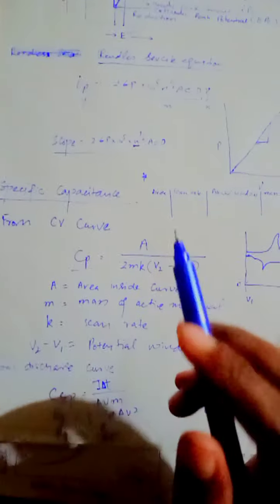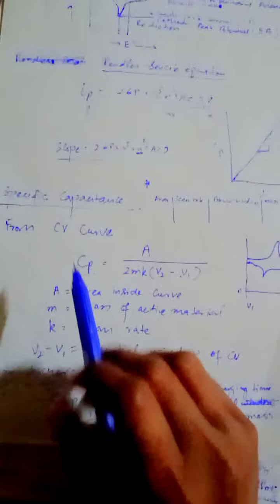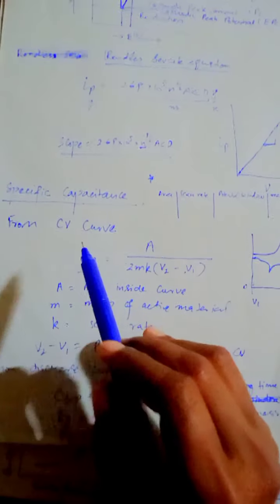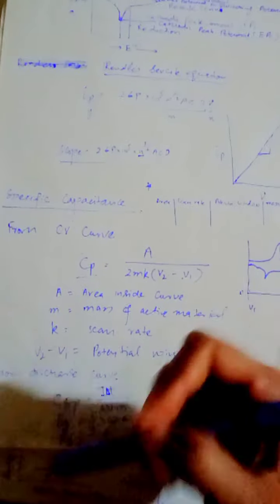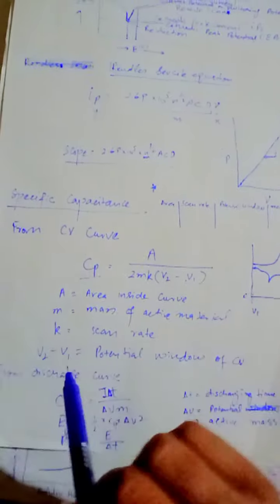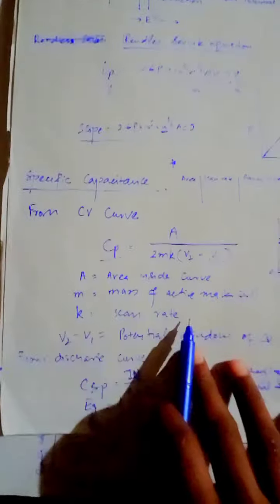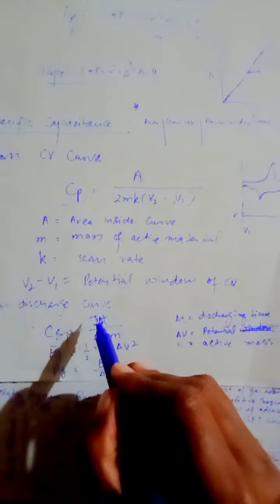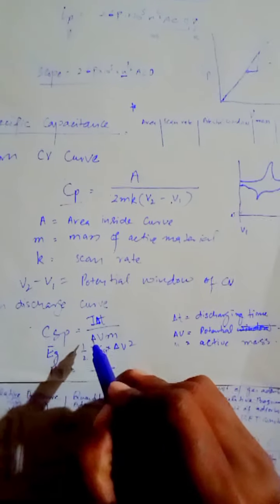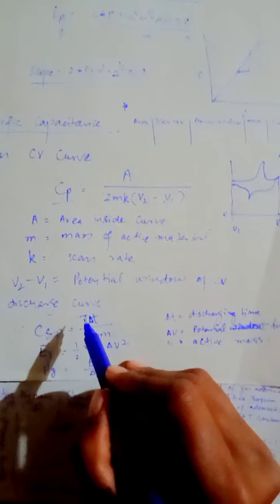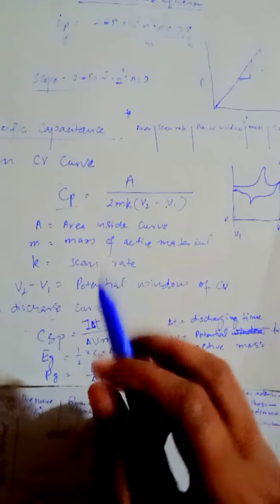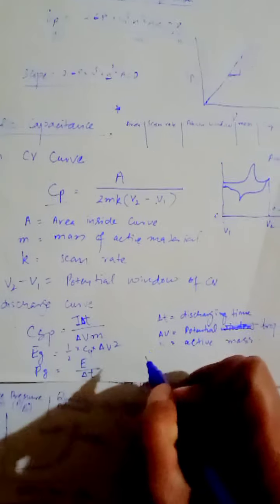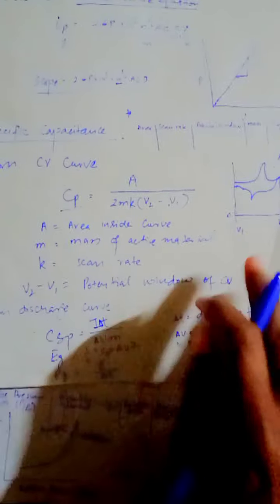ایک اور technique ہے جسے galvanostatic charge-discharge (GCD) technique کہتے ہیں۔ اس کے ذریعے specific capacitance، energy density اور power density بھی find ہو جاتی ہے — یہ super capacitor یا capacitor material کے لیے use کی جاتی ہے۔ اس technique میں تین equations ہیں۔ Specific capacitance کے لیے: Cs = (i × Δt) / (m × ΔV)۔ اس میں i current ہے، Δt discharging time ہے۔